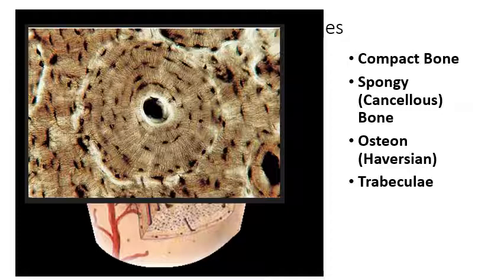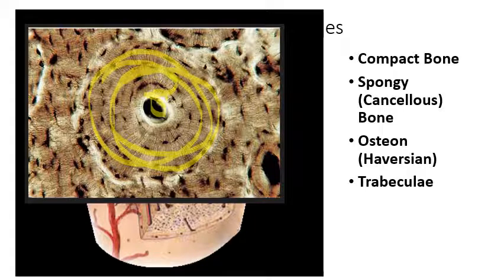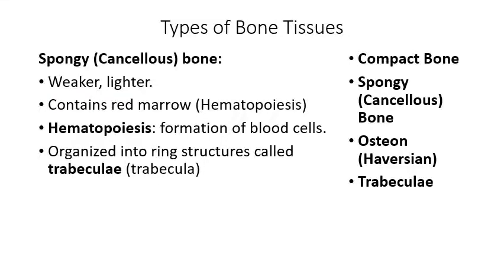Here's a top view of an osteon. You can see the Haversian canal in the middle as the dark part, with concentric rings of lamella around the outside — if you saw something that looked like this, you would know you're looking at bone tissue. Moving on to spongy cancellous bone: it is weaker and lighter, not as dense, and it contains red bone marrow where hematopoiesis takes place. Hematopoiesis is the process by which red bone marrow cells are converted to red and white blood cells that circulate in the blood.